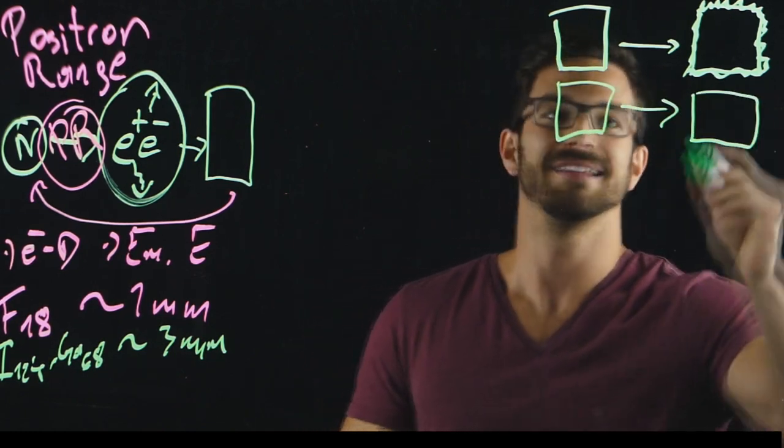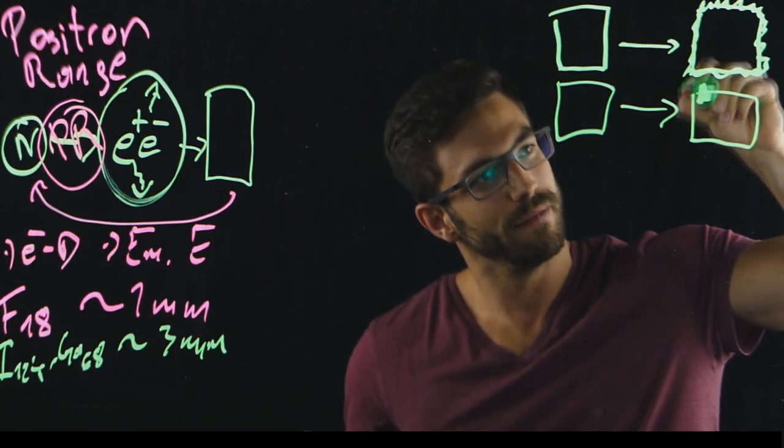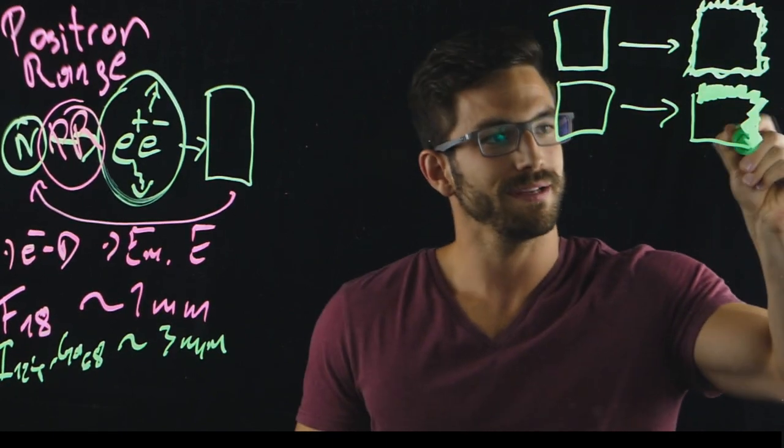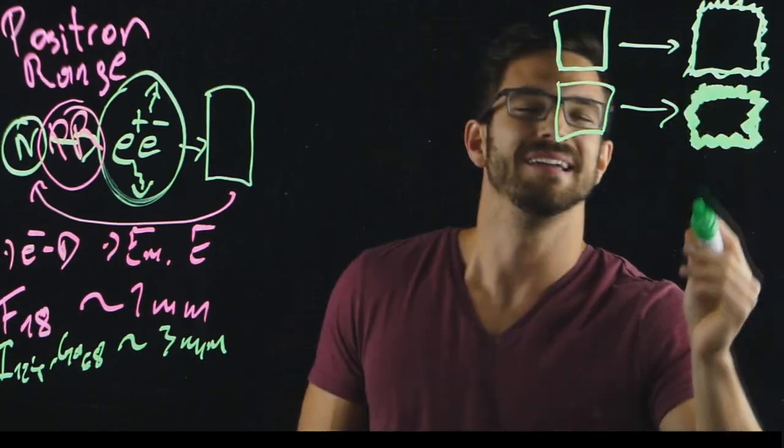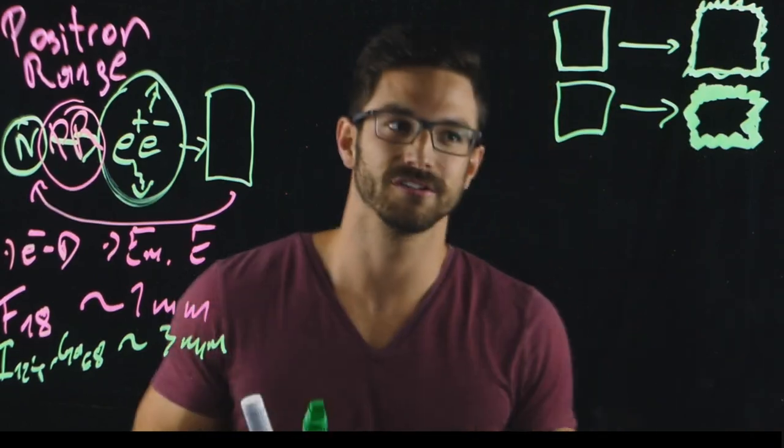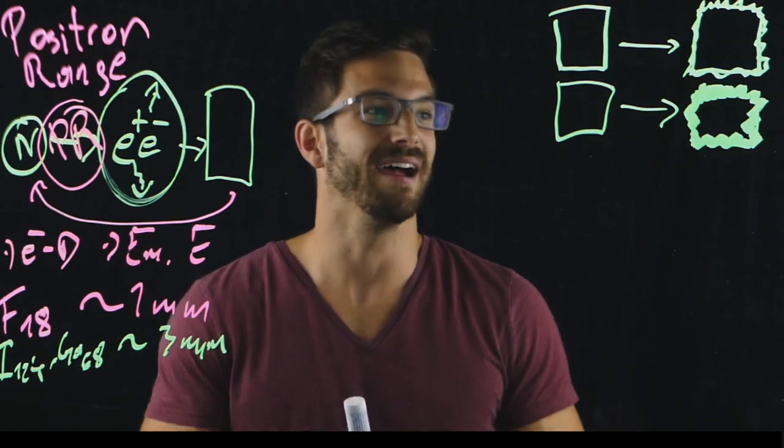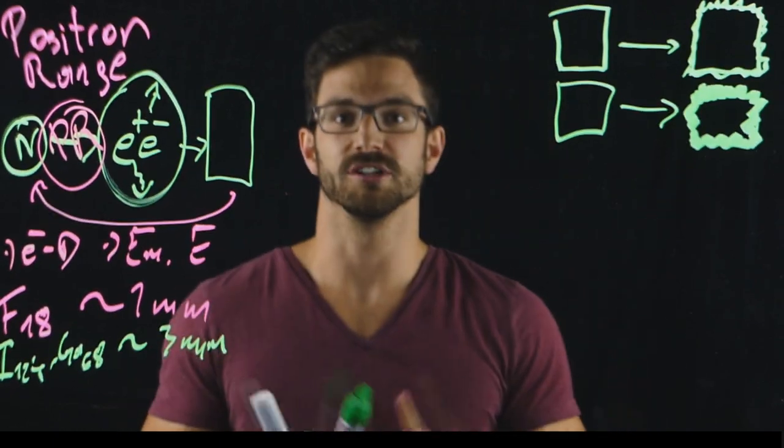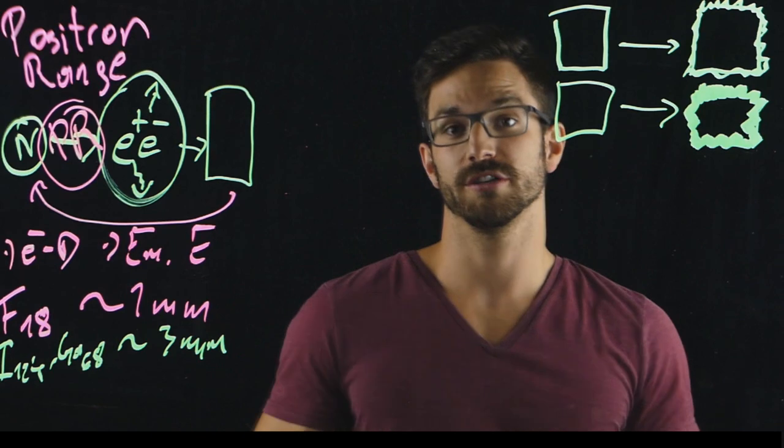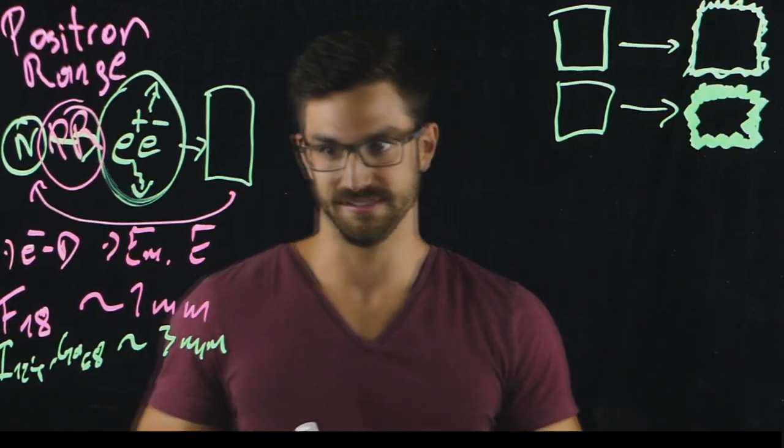We would see not something like this but really a blurred outside that in the end decreases the contrast, decreases the delineation, makes it for the clinicians very hard to interpret the image. Quantification due to positron range effect can be drastically decreased.